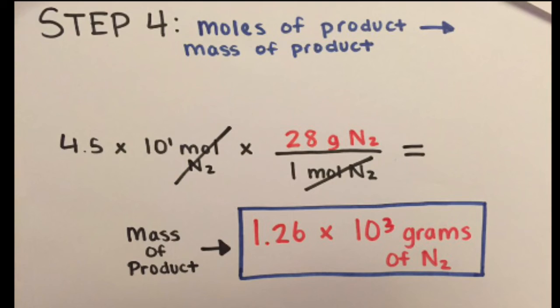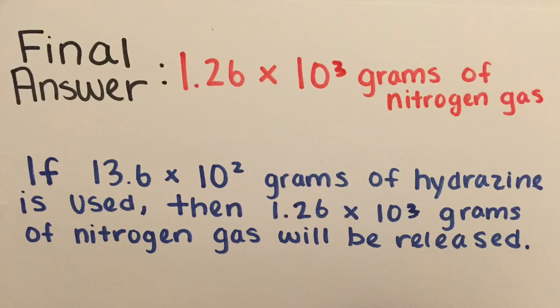Our new amount, and no longer the unknown, is 1.26 times 10 to the third grams of N2. We are finished and have answered the question.